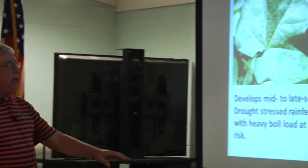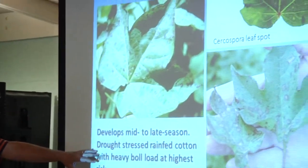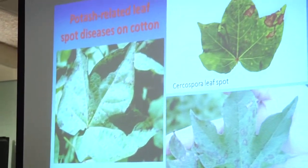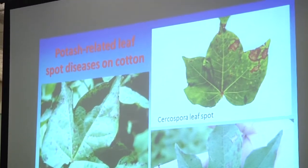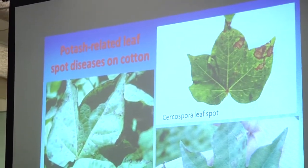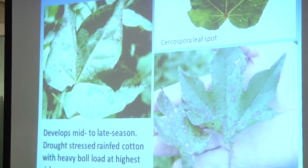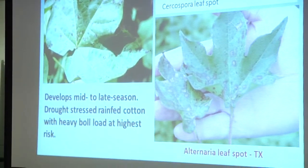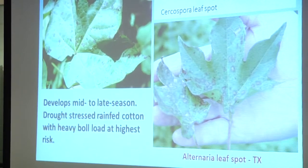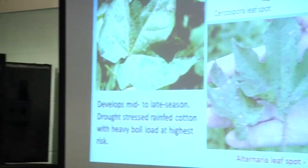The problems tend to develop late in the season, usually on rain-fed, drought-stressed cotton on sandy land, because potash availability — even if it's there — is interrupted by dry soil conditions. Under a heavy fruit load, the leaves will start to spot up and dry out.